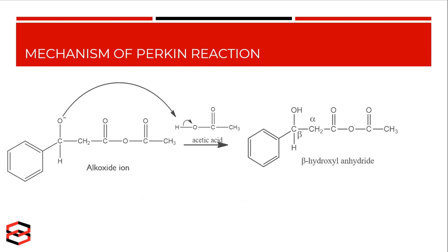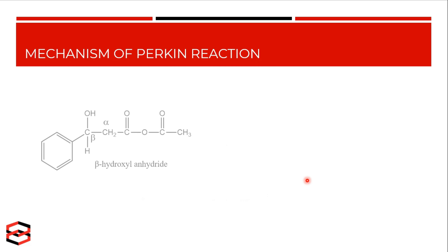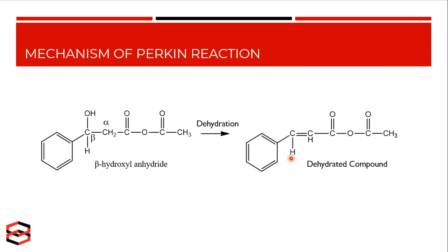This beta-hydroxy anhydride undergoes dehydration: the alpha carbon gives a hydrogen atom and the beta carbon gives the hydroxyl group to produce water. So a dehydrated compound is produced.